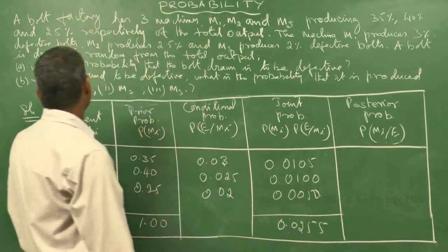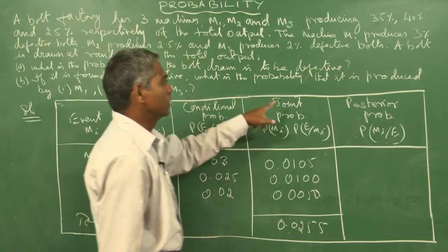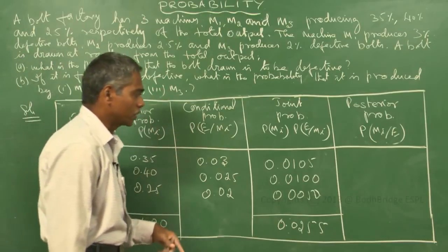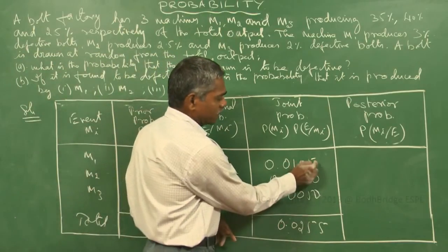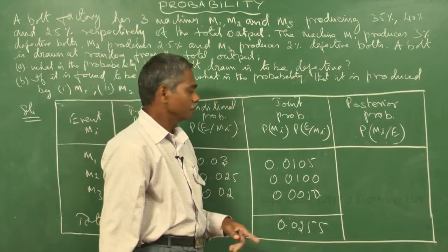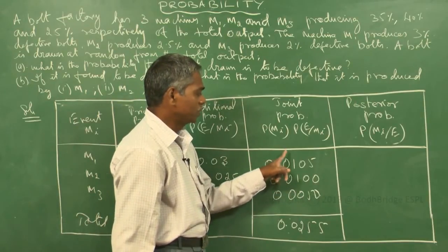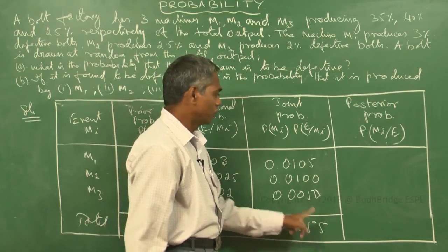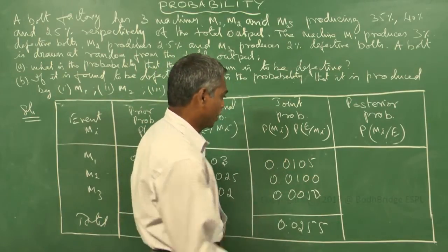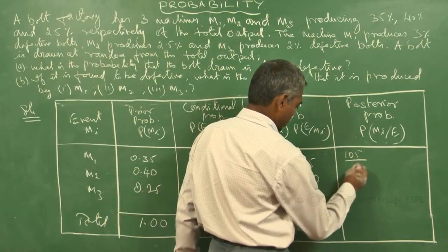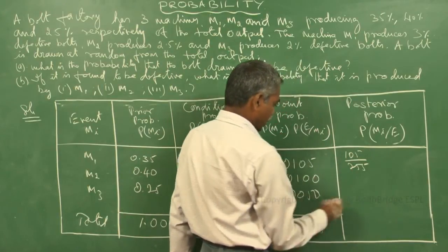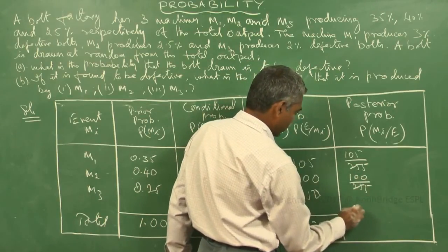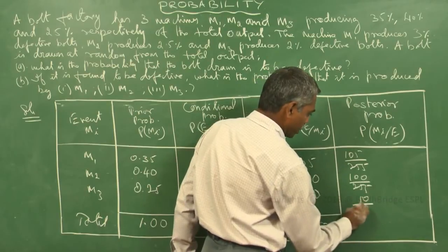Now for the second question: if the bolt is found to be defective, what is the probability it was produced by M1, M2, or M3? For posterior probability P(Mi | E), we divide each joint probability by the total. That is: 0.0105 / 0.0255, 0.0100 / 0.0255, and 0.0050 / 0.0255 — which gives 105/255, 100/255, and 50/255.